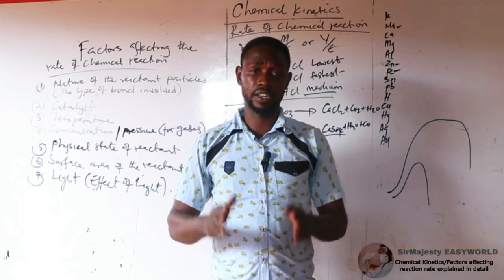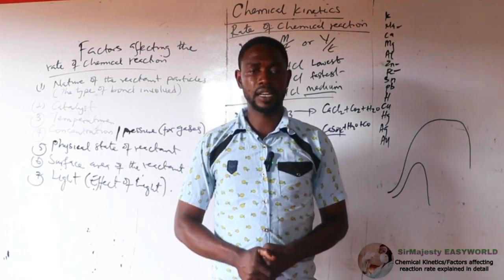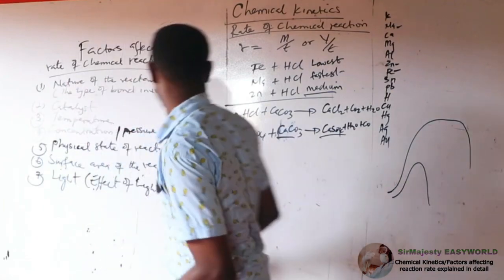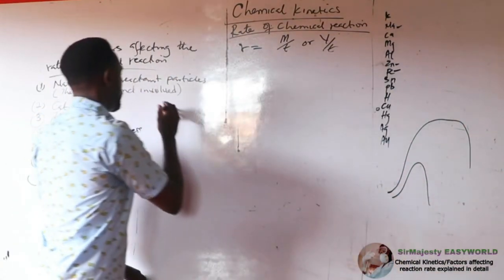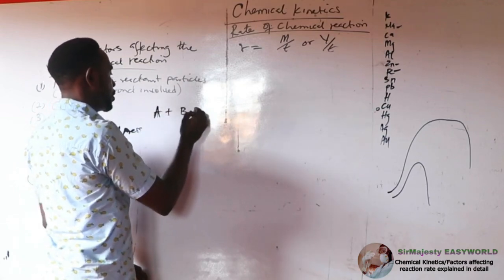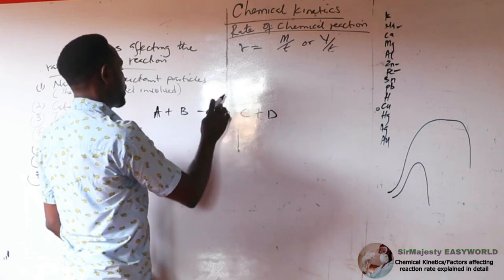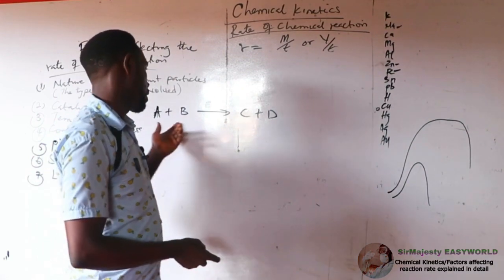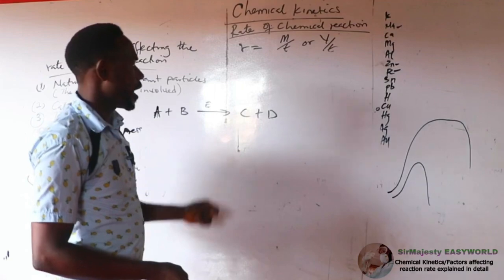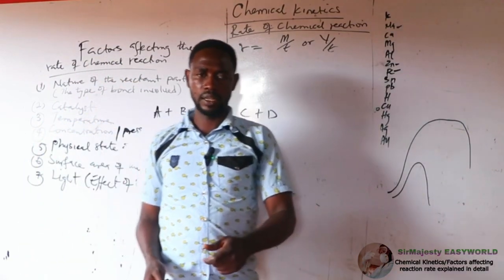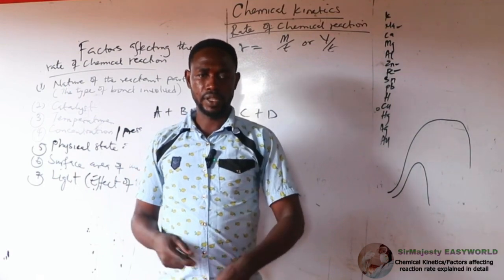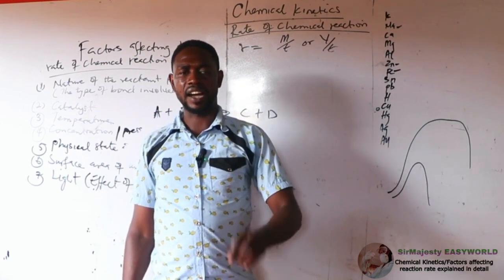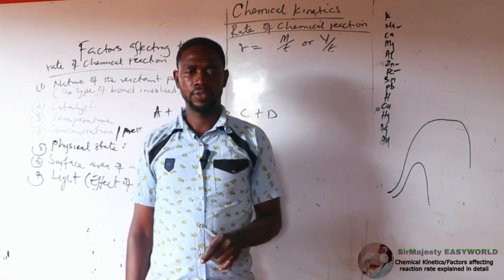Catalysts are written on top of the arrow of a given reaction, indicating they are neither a product nor a reactant. For example, if A + B reacts to give C + D and E acts as a catalyst, E is written on top of the arrow. Catalyst alters the rate of chemical reaction by affecting the activation energy of a given reaction.